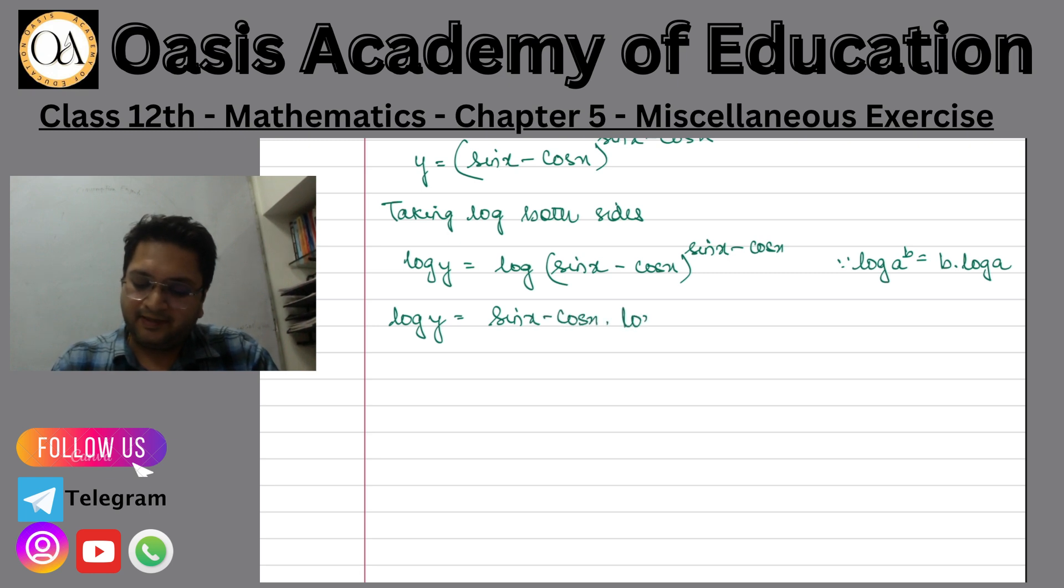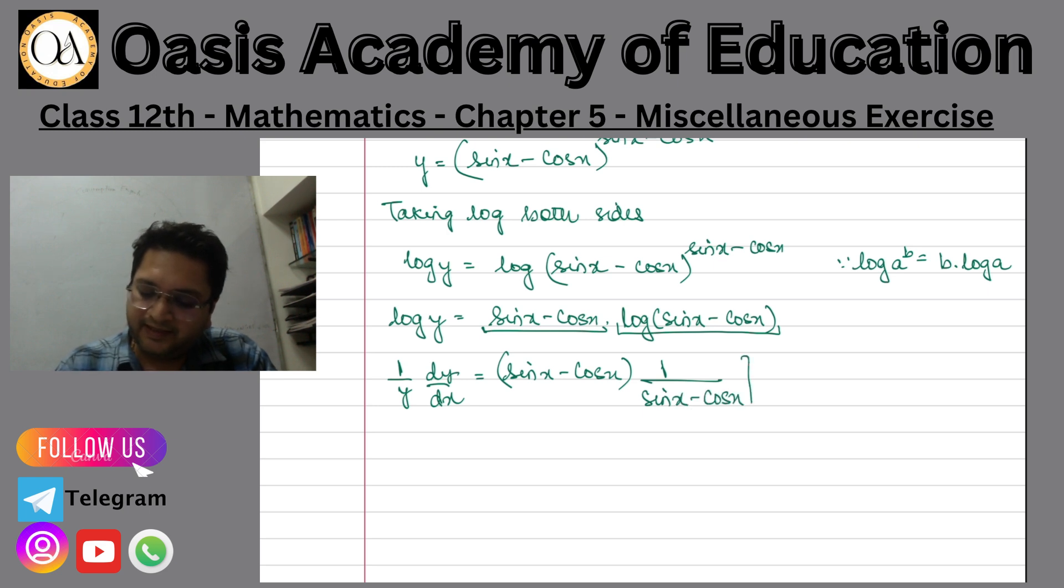Now if you see here, we have two functions. One is this and one is this. So I will apply product rule when I do differentiation. Here differentiation will be 1 by y dy by dx. Here I have first sine x minus cos x constant, and then I have 1 upon sin x minus cos x. Then I have sine x minus cos x differentiation which would be cos x minus minus sin x. So here sin x minus cos x, sin x minus cos x will be cut.